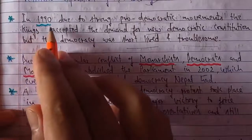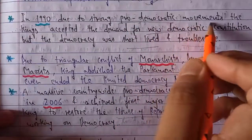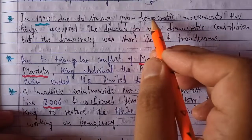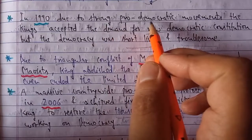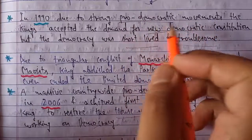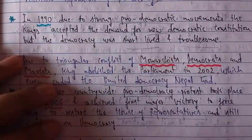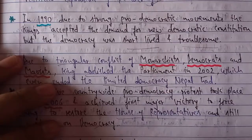In 1990, due to strong pro-democratic movements, there were demonstrations and turmoil all around the country for bringing democracy. People from all sections of society — rich, poor, irrespective of gender — came together to join this pro-democratic movement in the 1990s. The king was forced, as his subjects were revolting, and he had to accept the demand for a new democratic constitution. He gave some freedom and listened to the demand of the people.